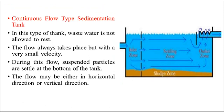Next is the continuous flow type of sedimentation tank. In this type of tank, wastewater is not allowed to rest but flows continuously. The flow always takes place with a small velocity. During this flow, suspended particles settle at the bottom of the tank. The flow may be either in the horizontal direction or in the vertical direction. This figure shows the rectangular continuous flow type of sedimentation tank.